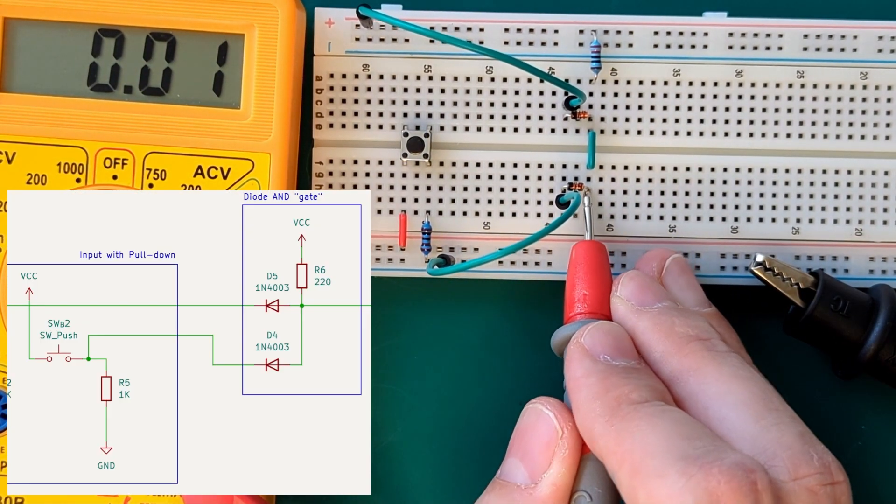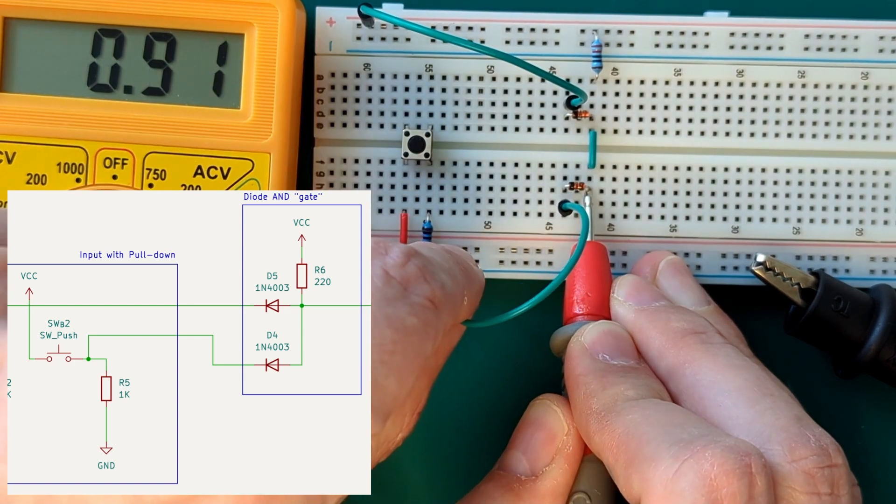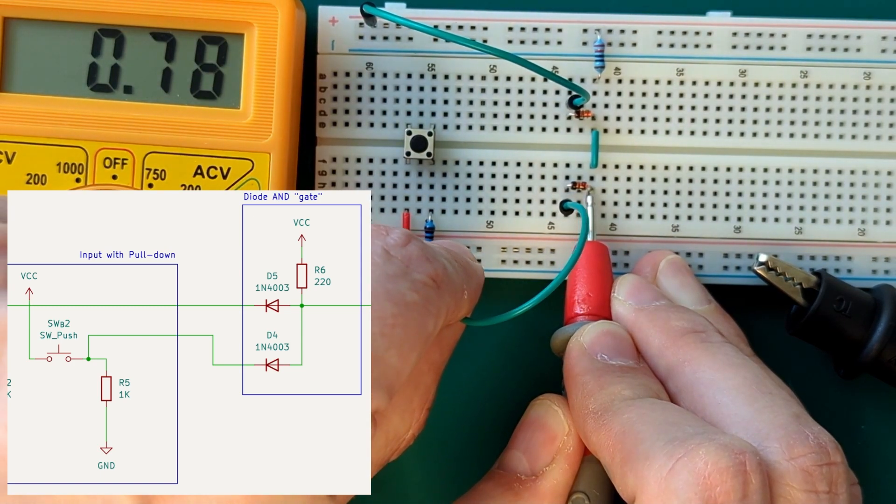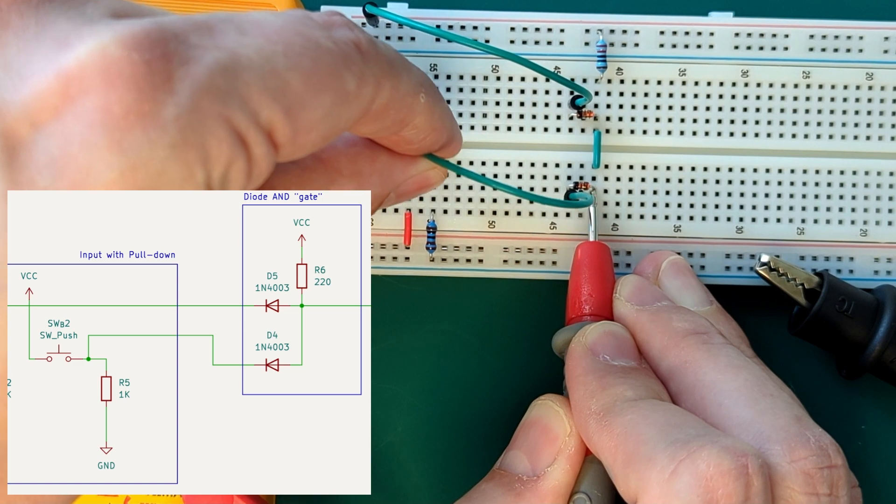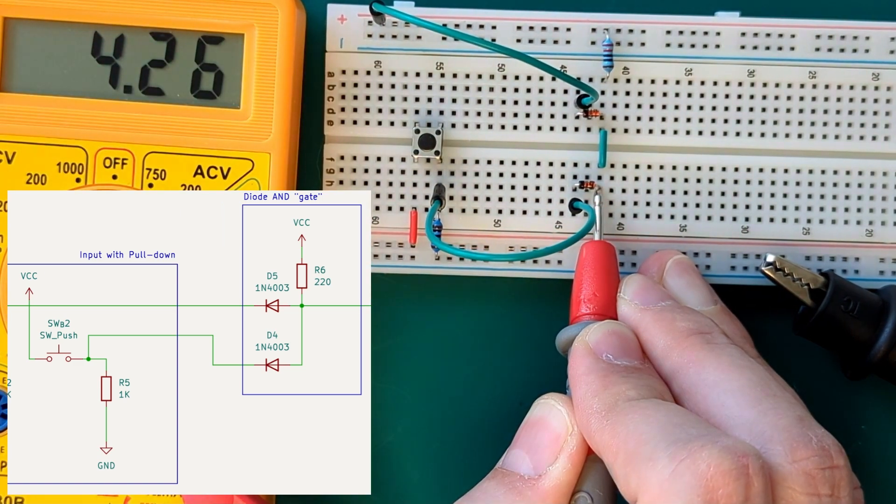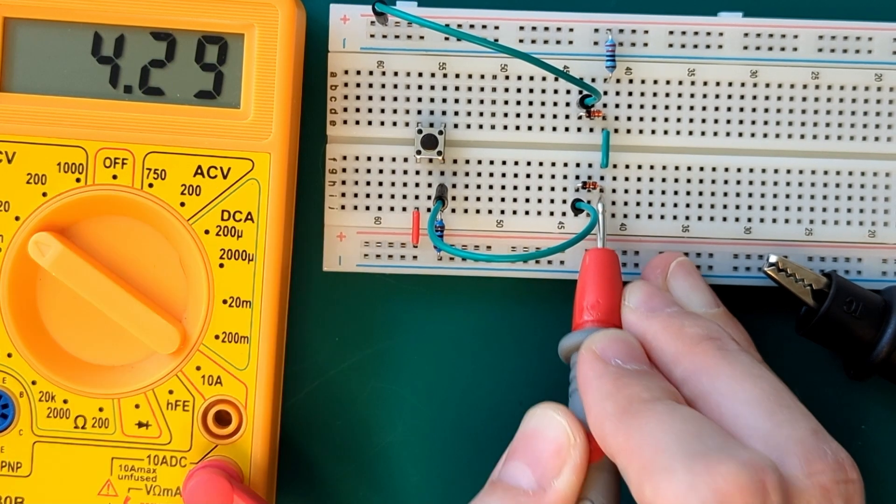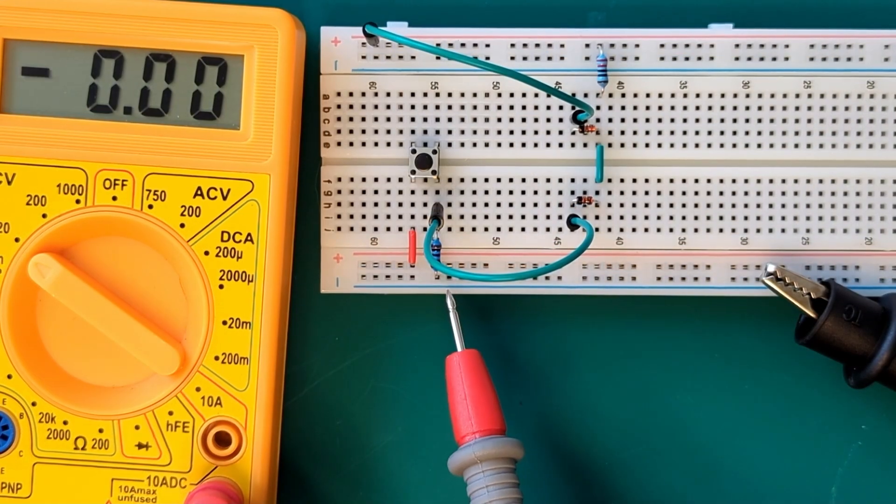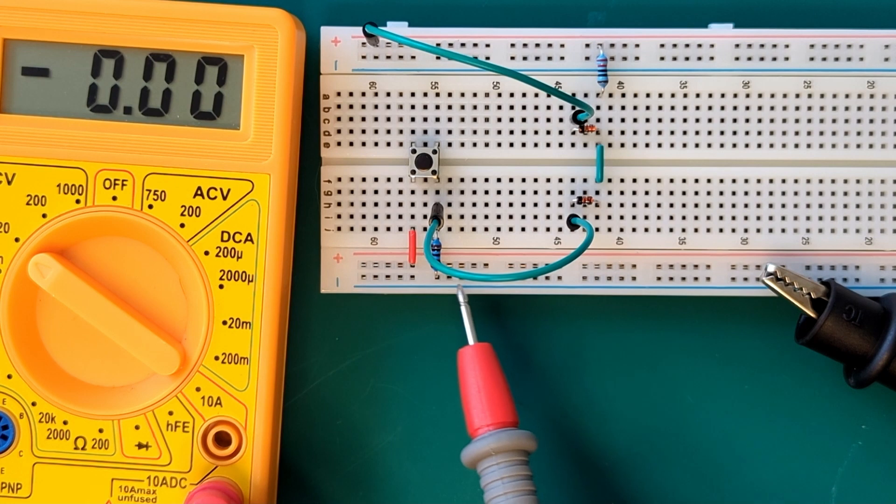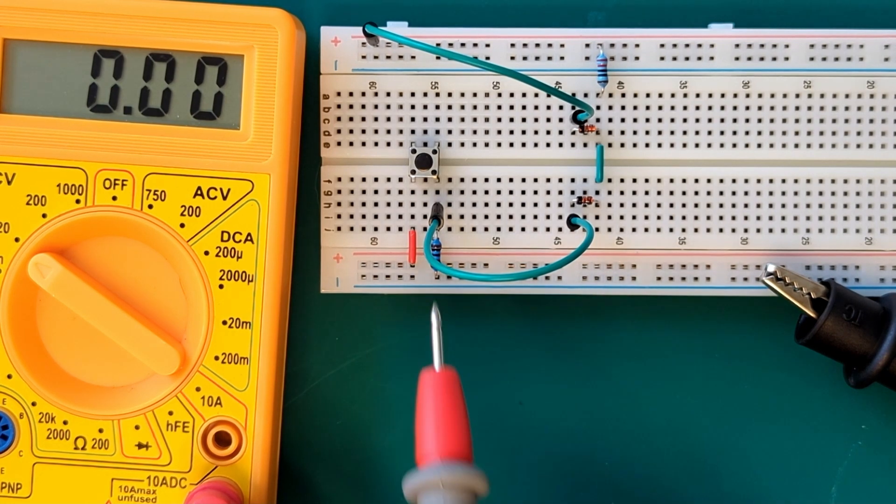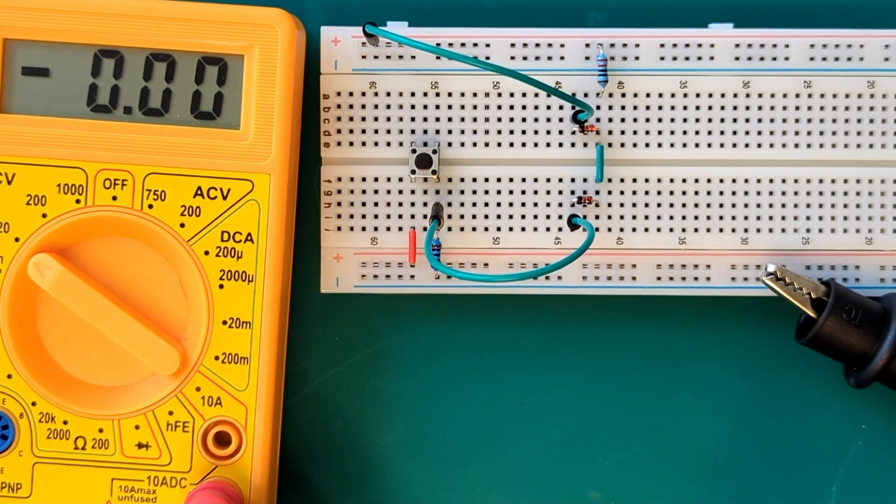But when I connected this input, which is connected to 0V, to the button output, which also is 0V, then I got a very different output of more than 4V. My conclusion is that this wire with 0V and this button output with 0V cannot be equivalent. In other words, the voltage is not the only important property of this interconnection.